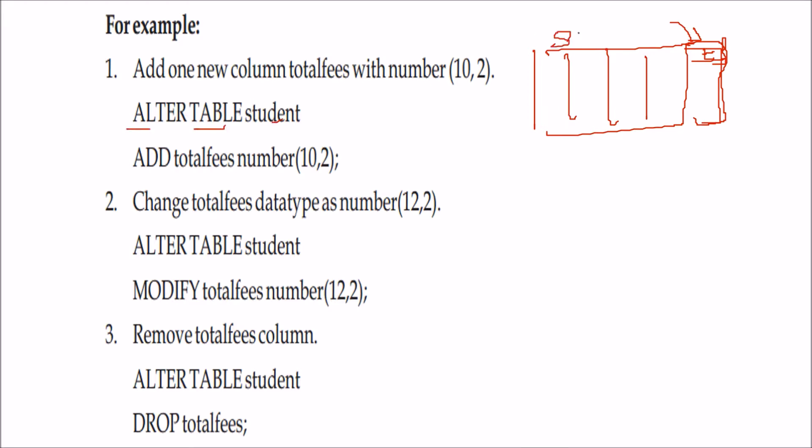ALTER TABLE student, this is the student table. ALTER TABLE student ADD totalfees number(10,2). So this will be precision 10,2. This 10,2, the value content will be having this precision.